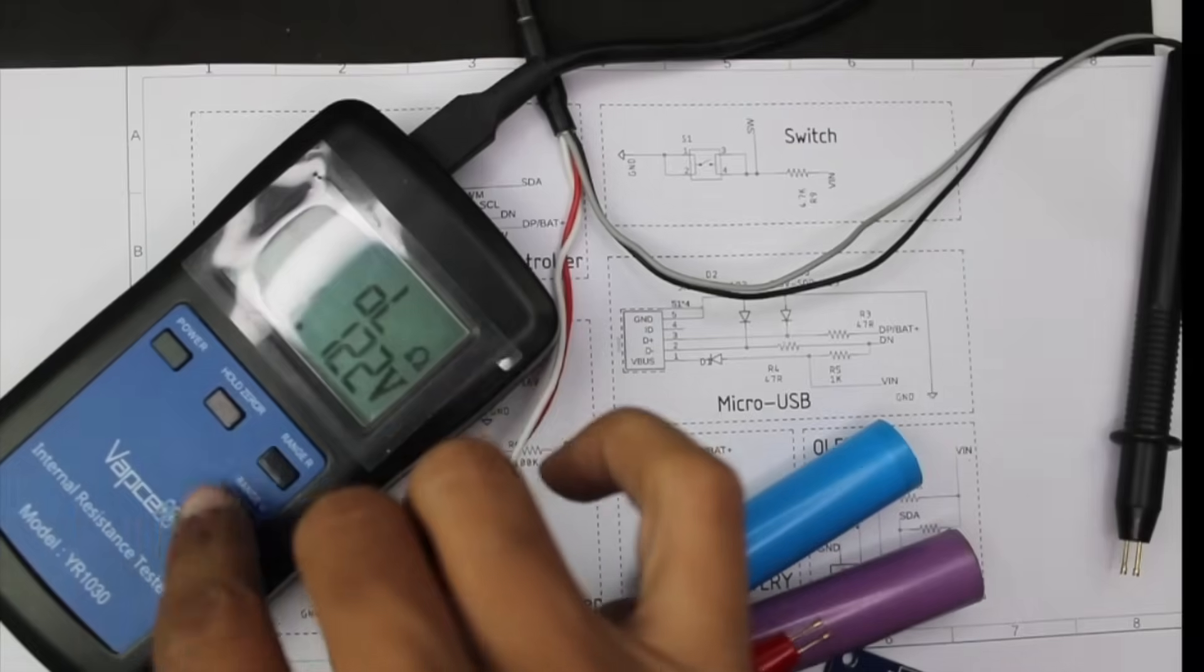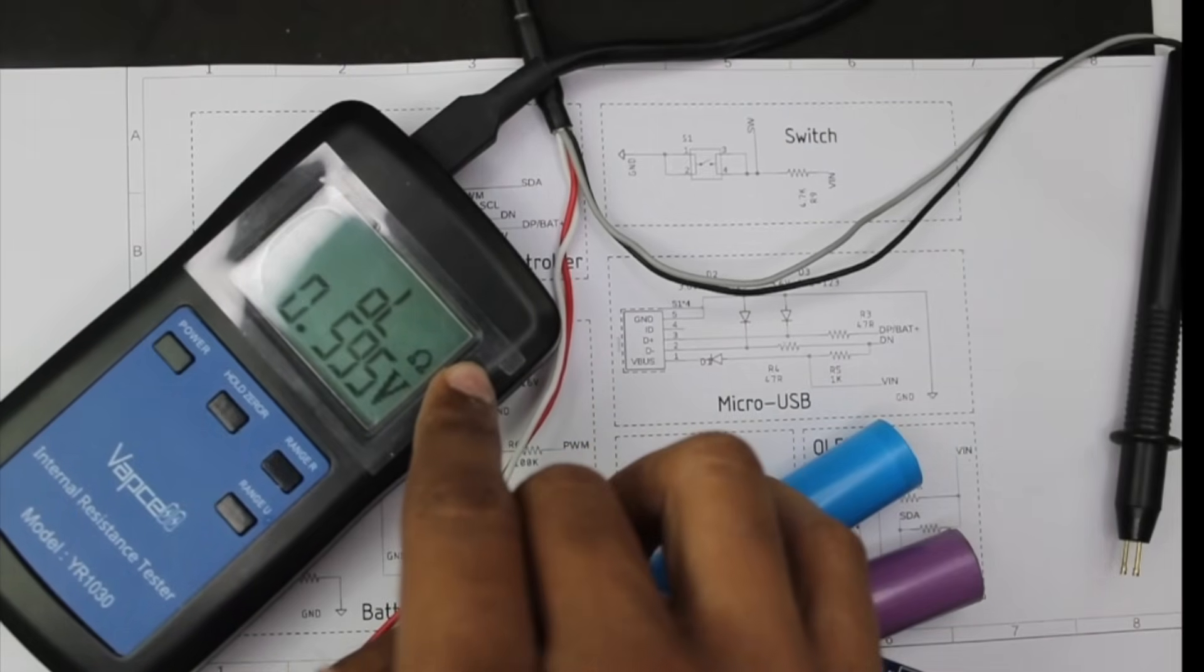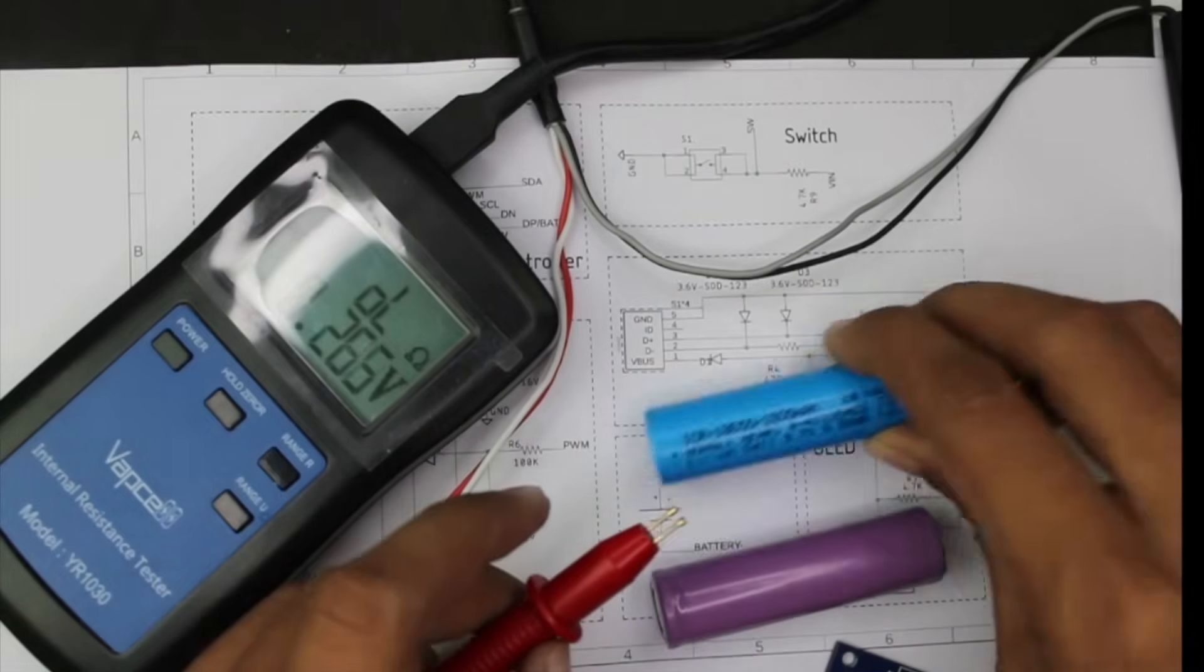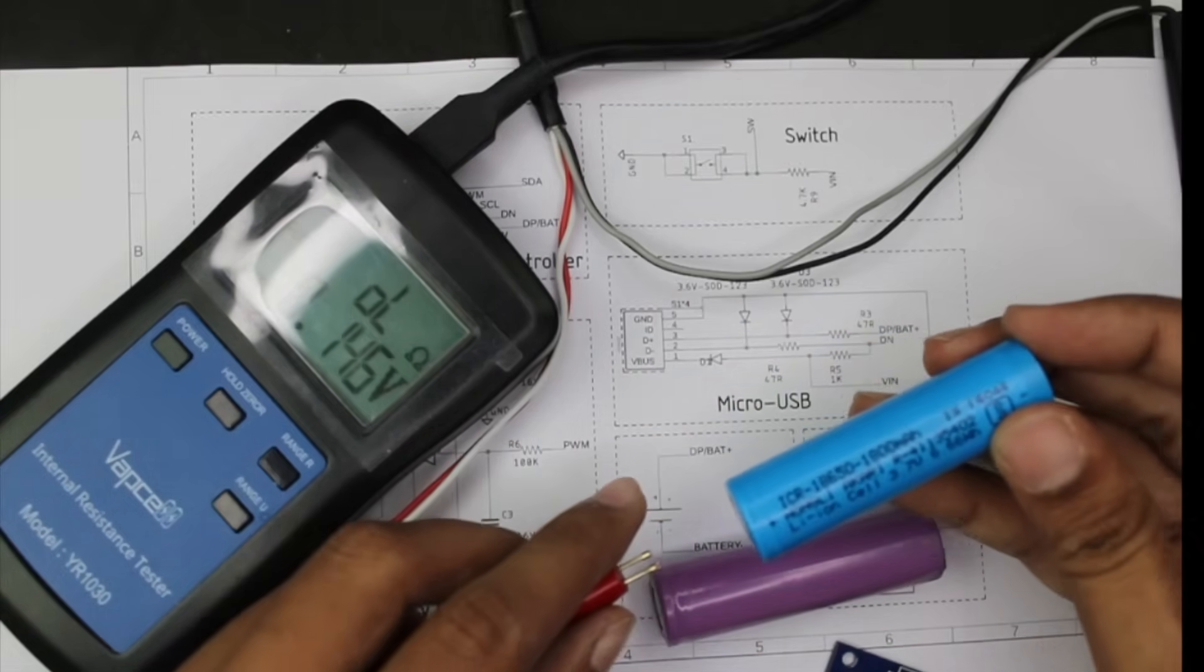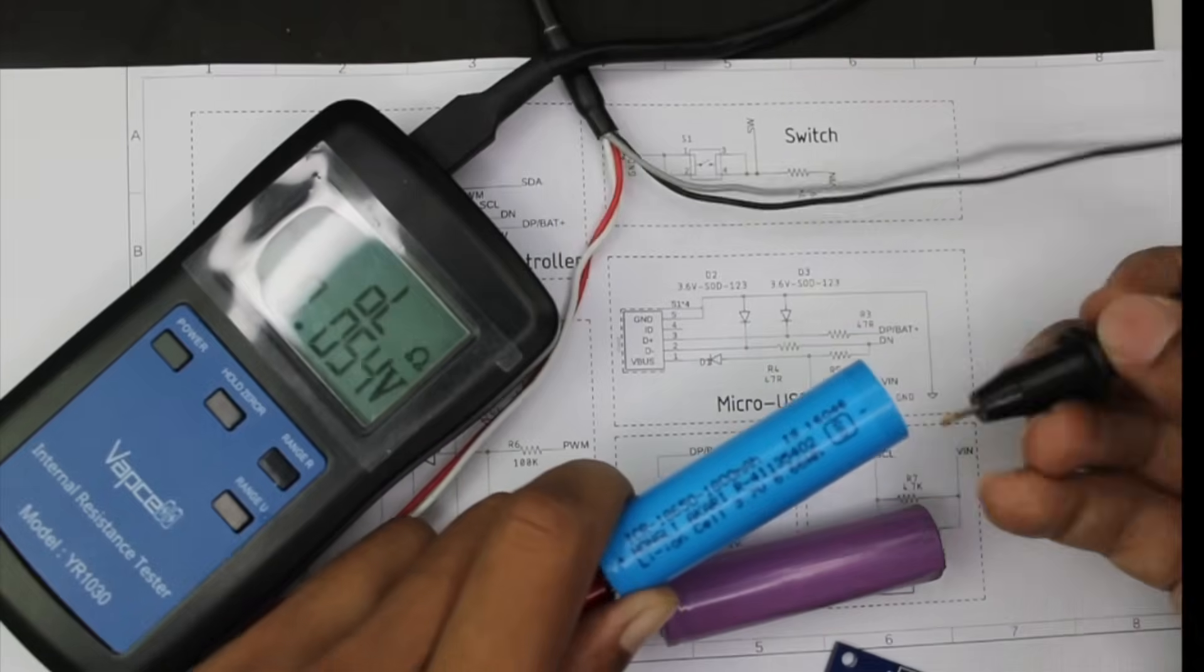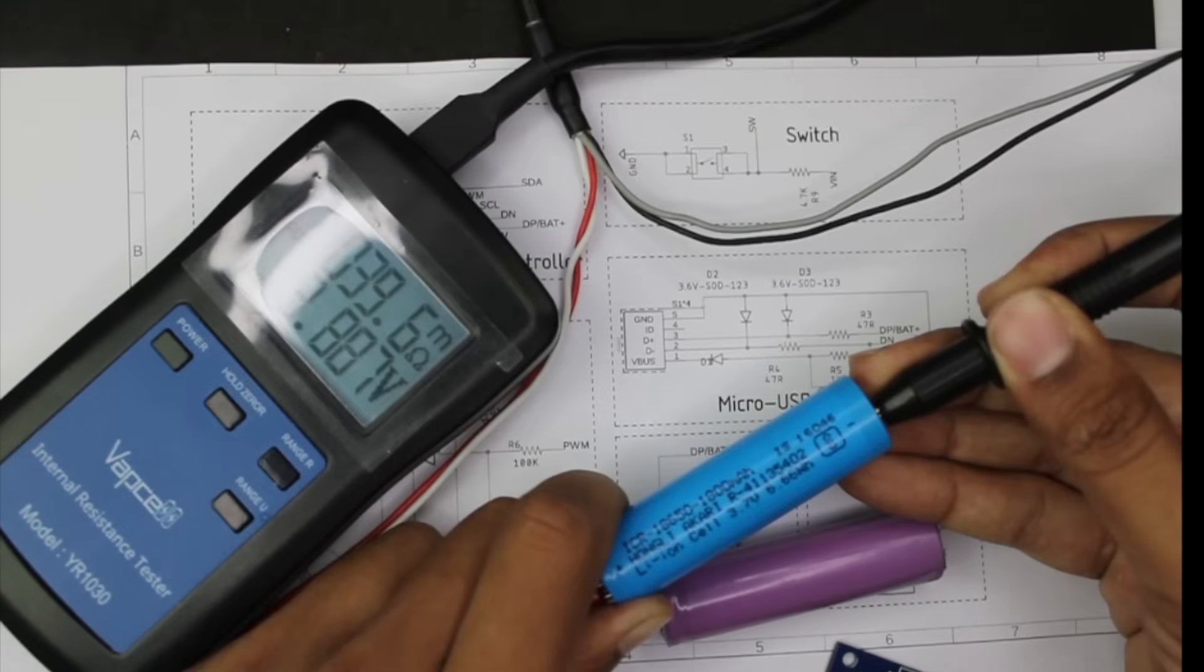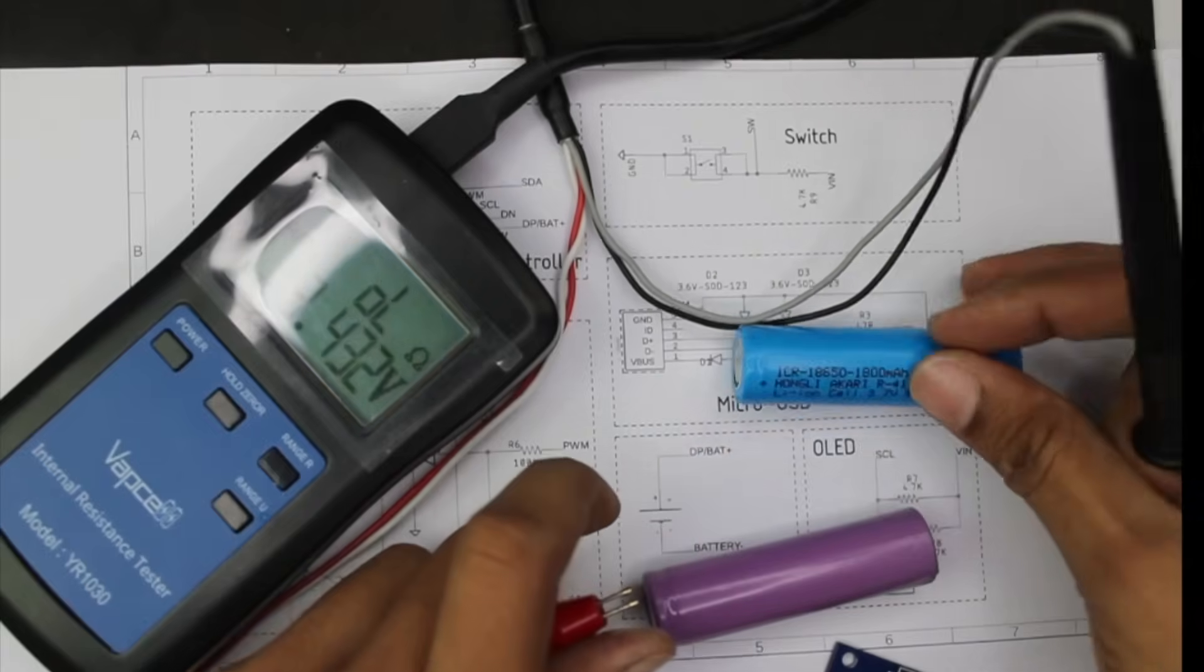Now we have an actual IR meter here which shows the voltage and internal resistance of the cell. Let's start with the blue cell. It was 0.045 ohms or 45 milliohms. With the actual meter we're measuring about 40 milliohms or 39.6, so we have around 5 milliohms tolerance.